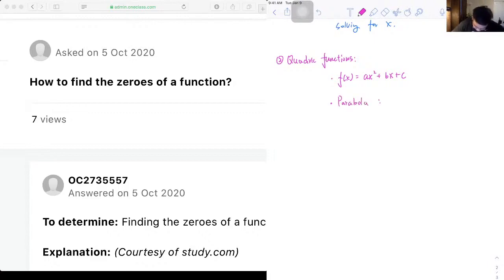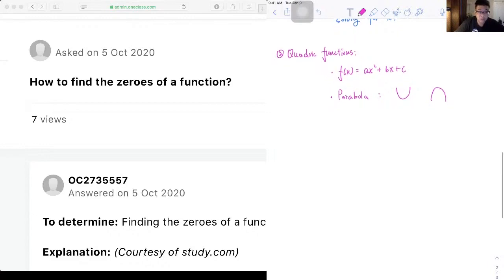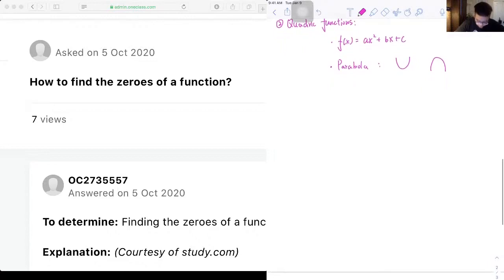And have graphs that are called parabolas, which look something like this or that. The zeros of the functions can be either zero, one, or two, and they are found when f(x) equals zero.